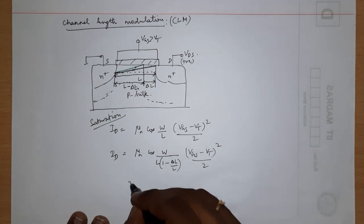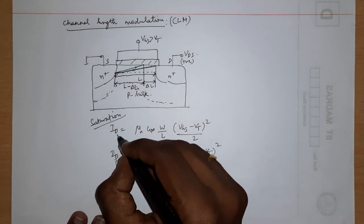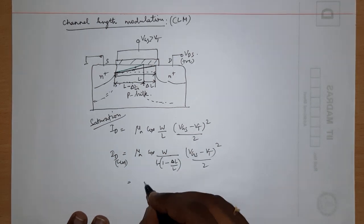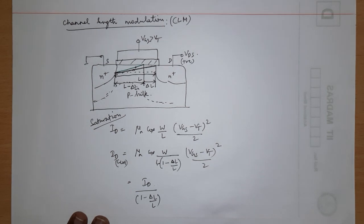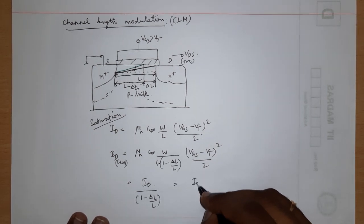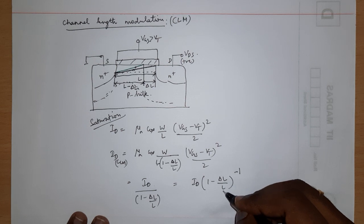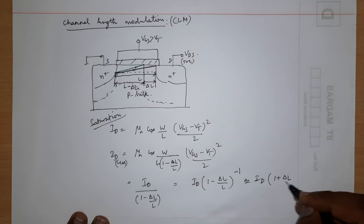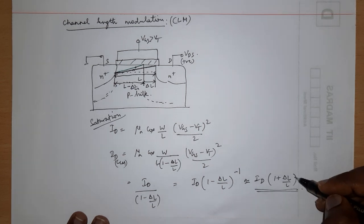Rearranging the expression: let the regular ID without channel length modulation be μn·Cox·(W/L)·(VGS − VT)²/2. Then the CLM-affected current is ID_CLM = ID / (1 − ΔL/L). Taking (1 − ΔL/L) to the numerator gives ID·(1 − ΔL/L)^(−1). Since ΔL/L is very small, by binomial expansion this approximates to ID·(1 + ΔL/L).